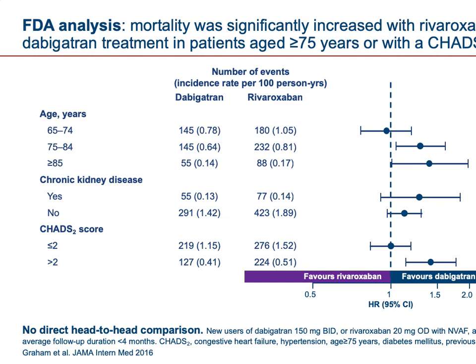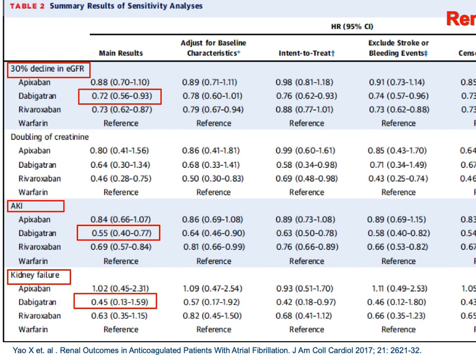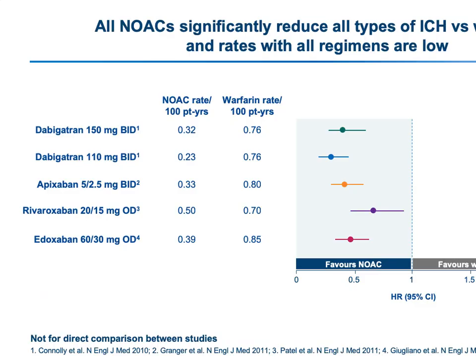The FDA analysis also examined different age groups and patients with chronic kidney disease — a common comorbidity in cardiac patients — as well as CHA₂DS₂-VASc scores for guiding anticoagulation decisions. This data again favored dabigatran versus rivaroxaban. For renal outcomes — including doubling of creatinine and 30% decline in eGFR — dabigatran performed much better, which is highly significant for dosage decision-making.